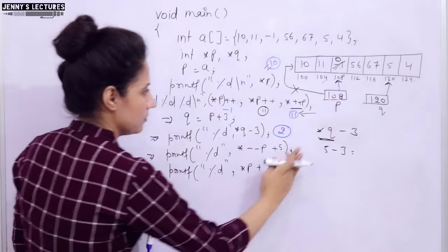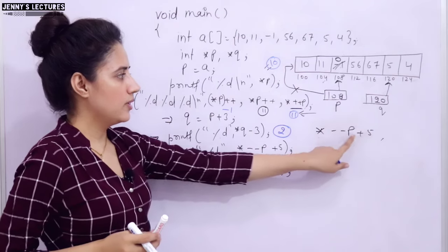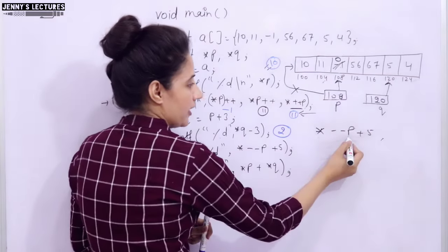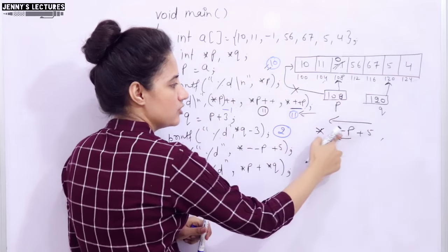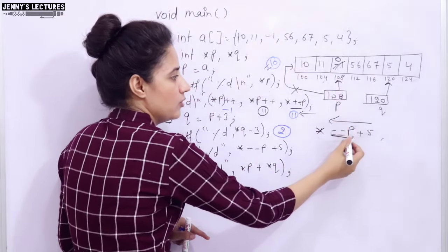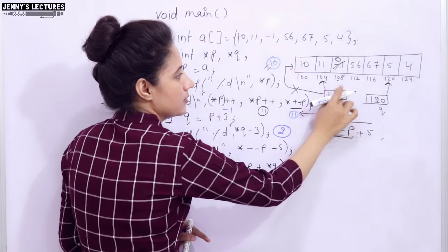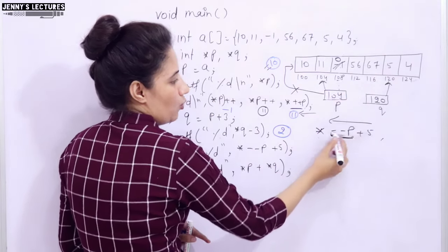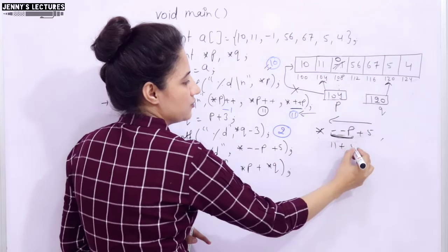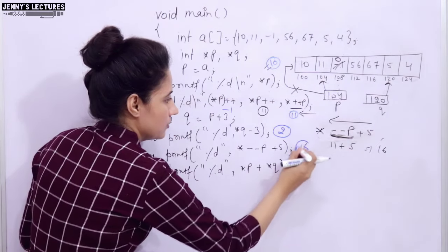Next expression: *(--P) + 5. Here * and -- have the same precedence, and associativity is right to left, so pre-decrement executes first. P had 108, after decrement P is now 104. Then * is applied — the value at 104 is 11. Then 11 + 5 gives 16. So this expression gives you 16.